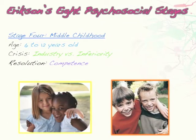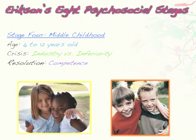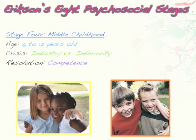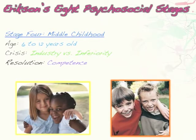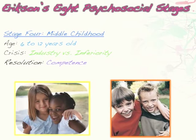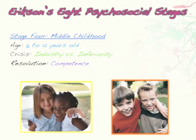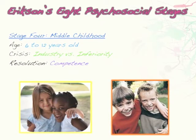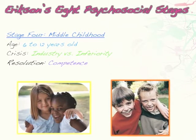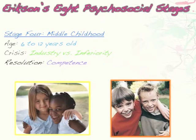Stage 4 is middle childhood, from 6 to 12 years old. The crisis is industry versus inferiority. Industry refers to setting goals — learning to read, write, calculate, developing physical skills in PE, and making friends. If the child successfully develops this sense of industry and completes their goals, they develop a sense of competence that lasts throughout life. If they don't, they develop a sense of inferiority — feeling less than others — which can persist into adulthood.